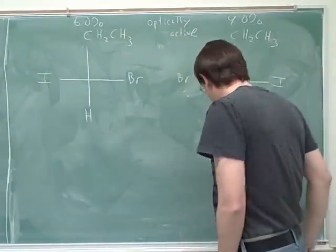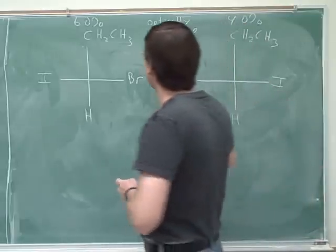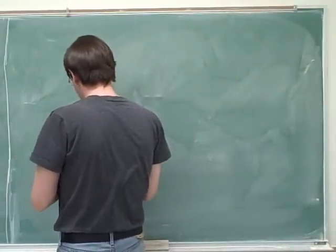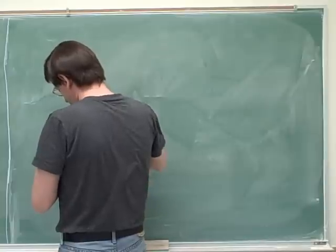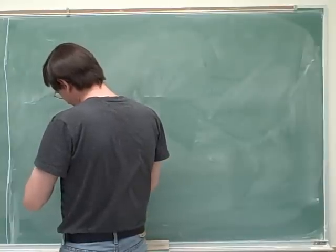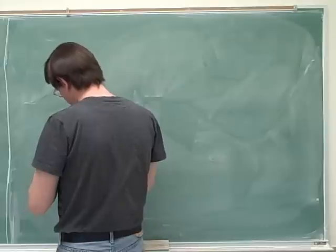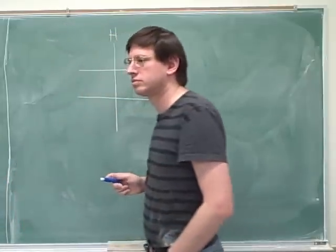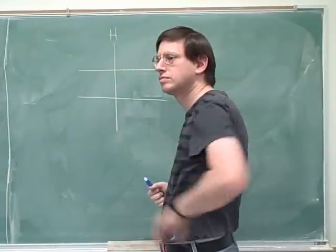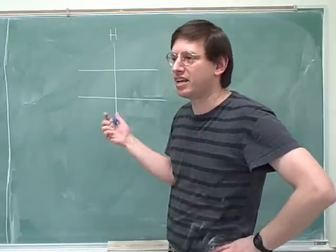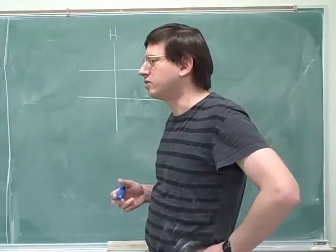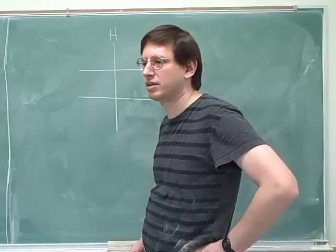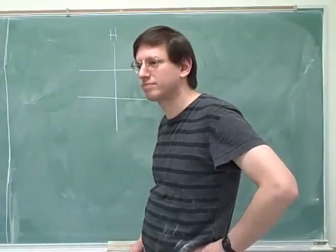We have to do one more example on the topic of optically active or inactive. If you have a solution made of one thing that's chiral and one thing that's not chiral, then is it somewhat optically active? That's right — the thing that is chiral would tend to rotate the light and the thing that's not chiral would have no effect. So it's optically active proportional to the percentage of the chiral molecule in the solution.